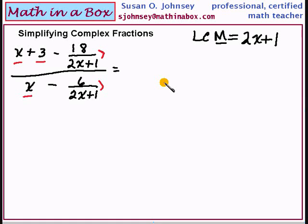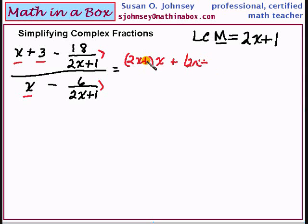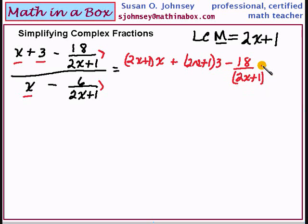Now it will take me a moment to write that, but you really do have to take the time. So write this: 2x plus 1 must be multiplied times the x; it must be multiplied times the plus 3, which is also the 1. And the fraction negative 18 over 2x plus 1. Now this is a fraction — we are multiplying with this 2x plus 1, it is in the numerator, so actually when we do this division here, these will divide out.